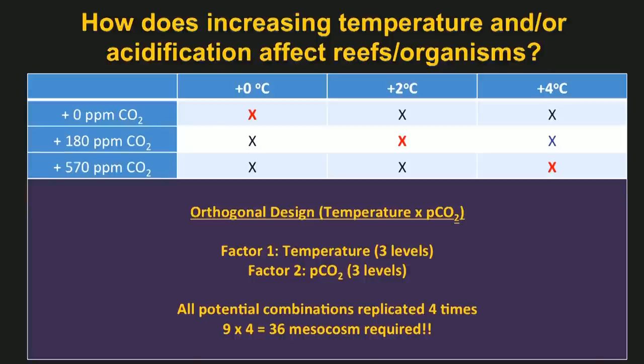Significant funds, space and help would be required to run such an experiment. To provide the same level of tank replication, a total of 36 tanks would be required, making it difficult not only to clean them, but also to take measurements at one point in time for all the tanks. Such experiments are typically performed for short periods of time without including seasonal fluctuations — that is, at constant temperature and acidification levels.